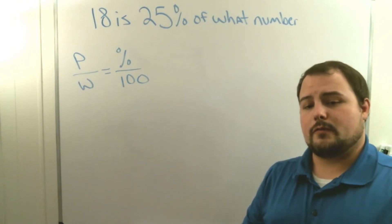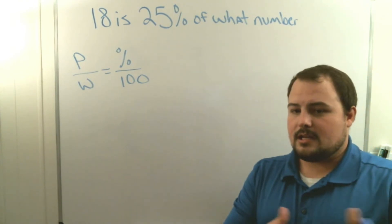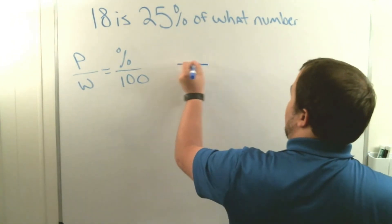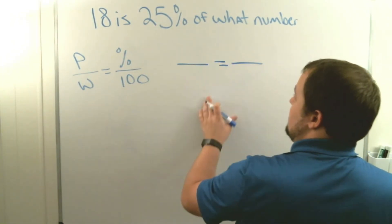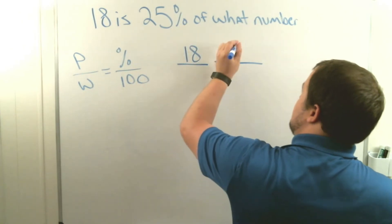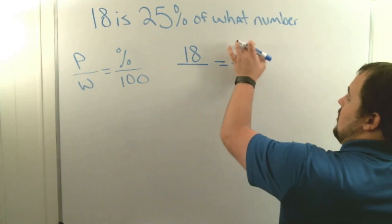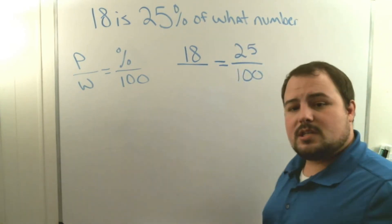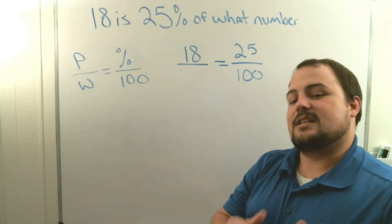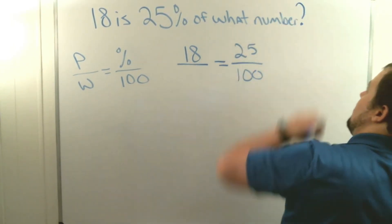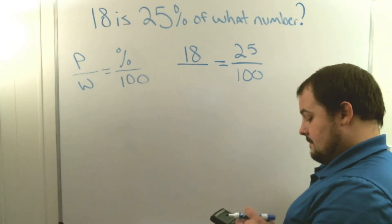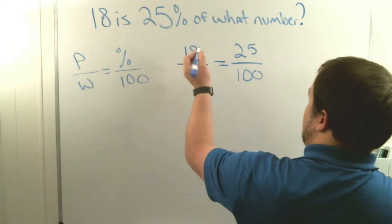For our final example, we're finding the whole — the piece we haven't solved for yet. In example one we found the percent, in example two we found the part, and now we find the whole. We set up the fraction equals fraction. The number 18 uses the word 'is,' so it's the part. 25 percent goes over 100 since all percents are out of 100. The problem says 'of what number,' so we're missing the whole. I'll use the variable 'c' for that spot.